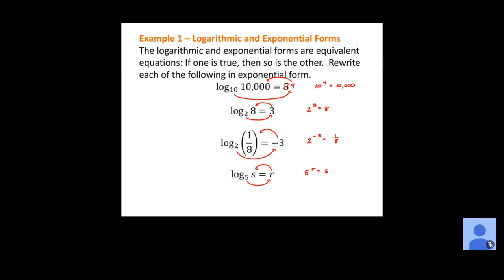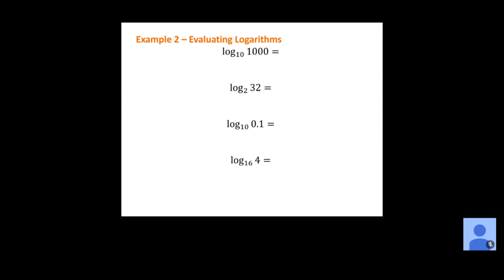All of these logarithmic forms and exponential forms are equivalent to each other. If we can rewrite one as the other, it might help us to solve some of these problems. Now we're going to actually try to evaluate. So 10 to some power x should equal the number inside the logarithm. We rewrite this in exponential form as 10 to the x equals 1,000. We're trying to find what exponent we'd raise 10 to in order to get 1,000.